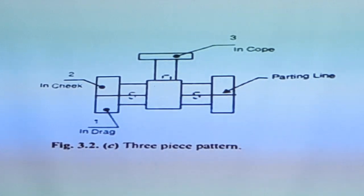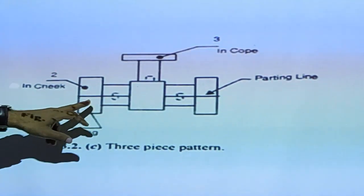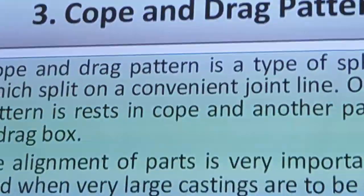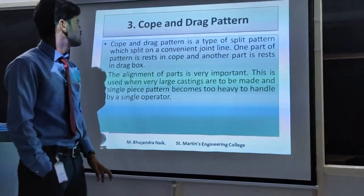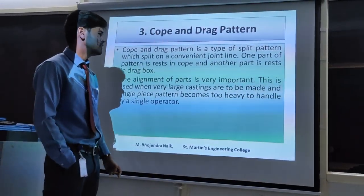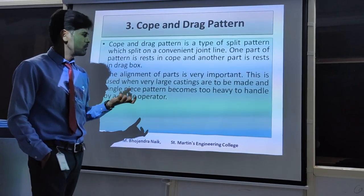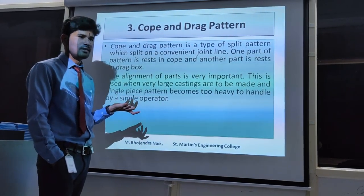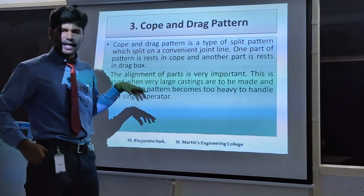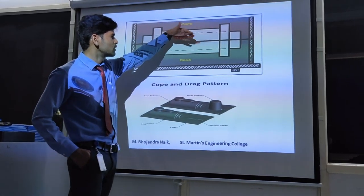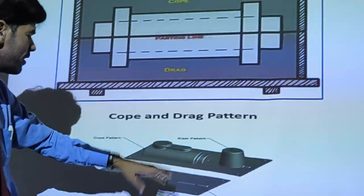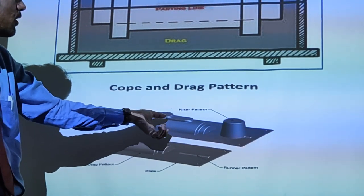Another type of pattern is the cope and drag pattern. In the case of very heavy parts like automobile engine components, it is very difficult to make the product in small pieces. The size of the parts is very, very heavy, so those parts should be kept entirely in the drag box or in the cope box. That pattern is called a cope and drag pattern. One part is entirely kept in the cope and the other is entirely kept in the drag box.